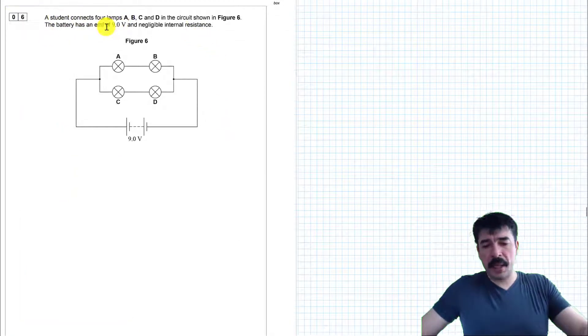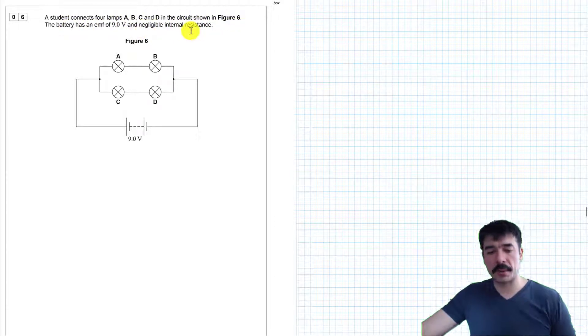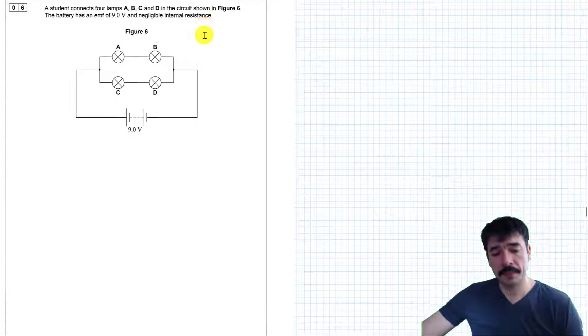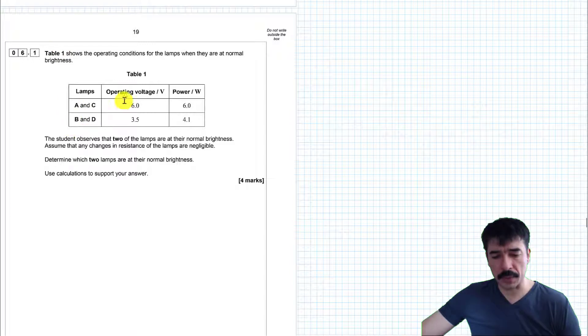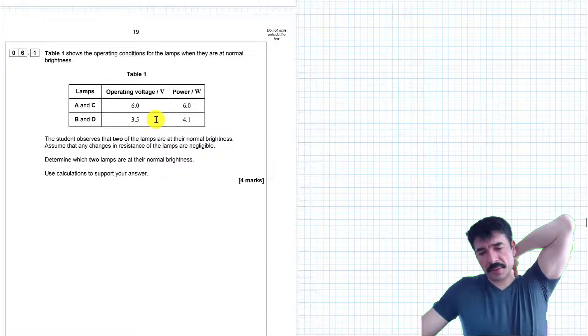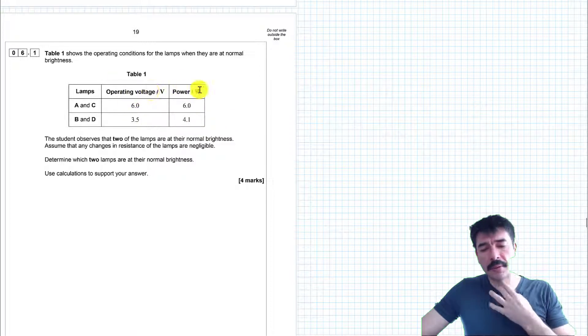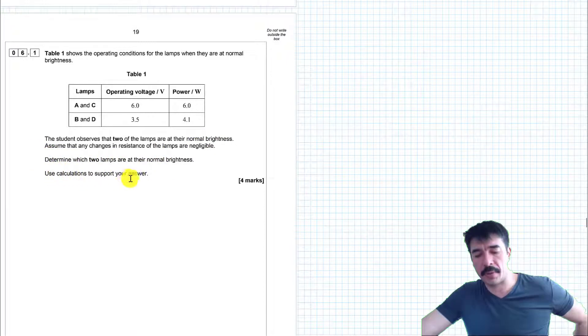A student connects four lamps A, B, C and D in the circuit shown in figure 6. The battery has an EMF of 9 volts and negligible internal resistance. Table 1 shows the operating conditions for the lamps when they are at their normal brightness. So you've got the operating voltage for lamps A and C, 6 volts and 6 watts, and for B and D, 3.5 volts and 4.1 watts. So we know the operating voltage and the power. The student observes that two of the lamps are at their normal brightness. Assume that any changes in resistance of the lamps are negligible. Determine which two lamps are at their normal brightness. Use calculations to support your answer.